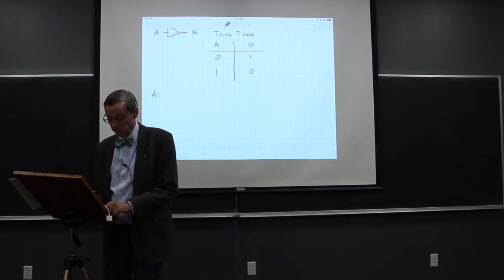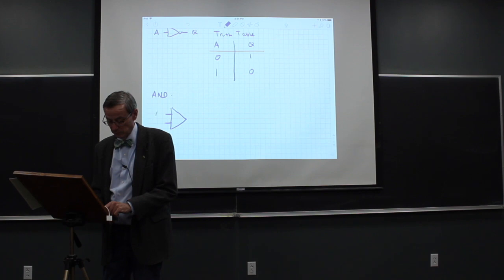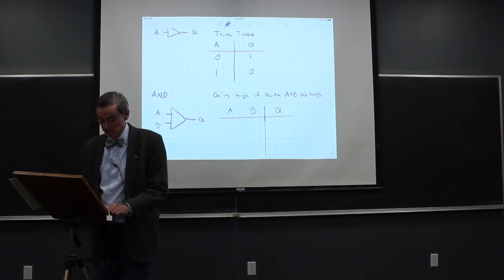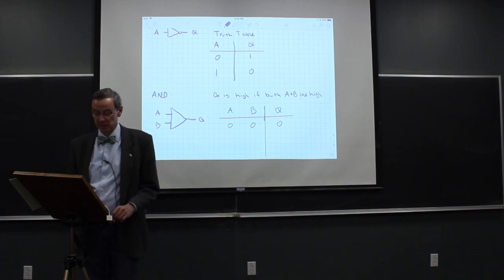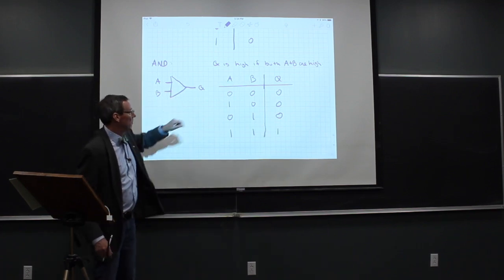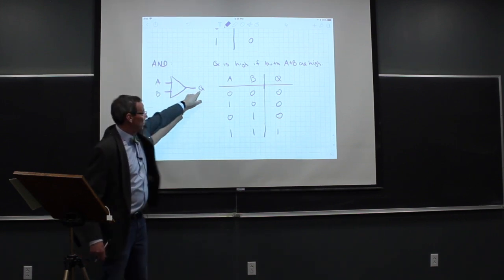We can do an AND gate, which has two inputs A and B, and output Q. Q is high only if both A and B are high. Truth table: A=0, B=0 gives Q=0; A=1, B=0 gives Q=0; A=0, B=1 gives Q=0; A=1, B=1 gives Q=1. So if both inputs are one, the output is one; otherwise it's zero.